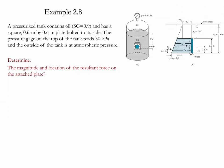Example 2.8. In this example we have a pressurized tank which contains oil with a specific gravity of 0.9. It also has a square bolted plate which has a cross-sectional area of 0.6 by 0.6 meters, and this is bolted to the side.